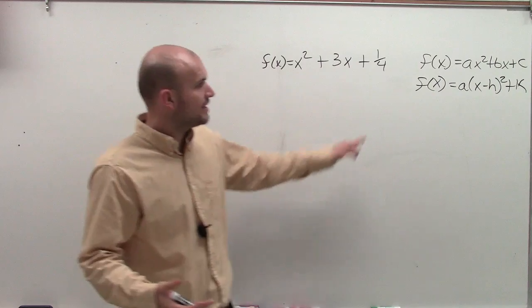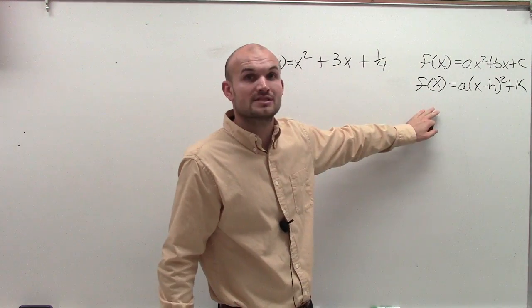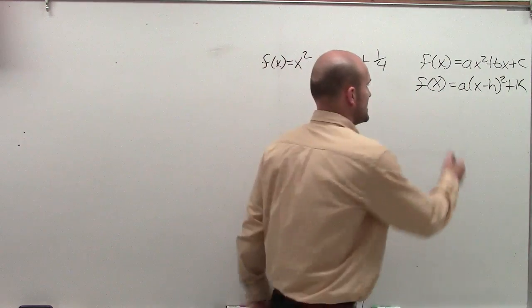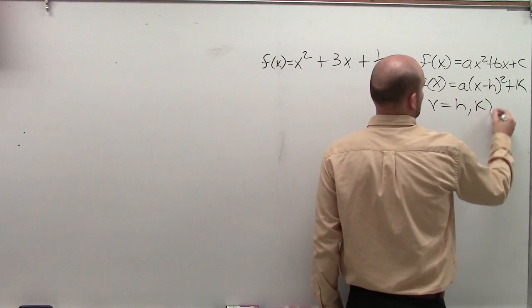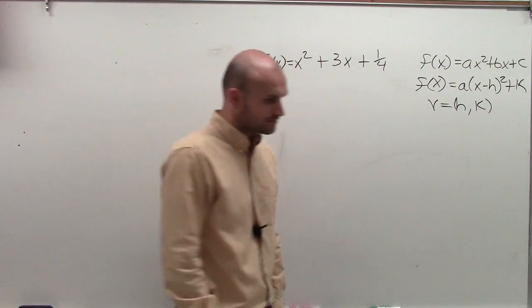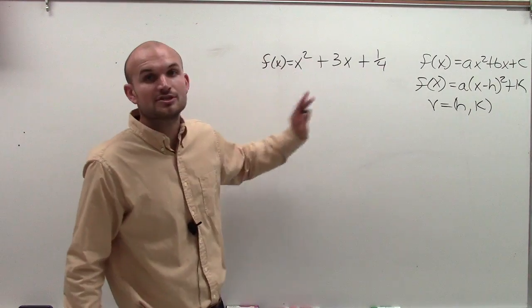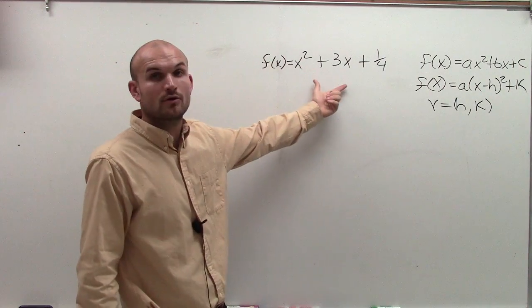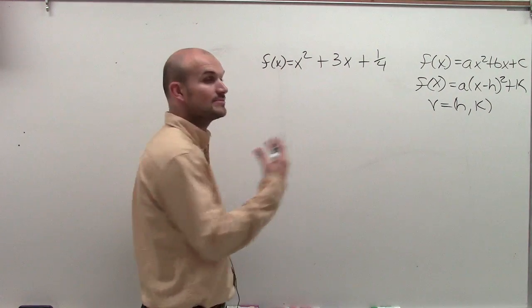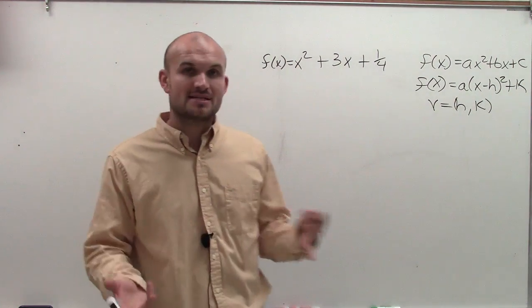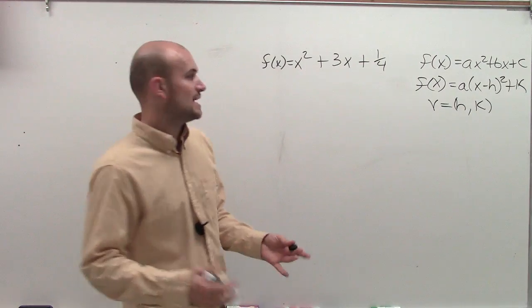So to find the vertex, it's very helpful to understand the standard form because the vertex, when in standard form, is equal to h comma k. So right now, what I want to do is I want to look to how can I create my quadratic into standard form? So what I want to do for that is I'm going to want to use the process of completing the square. And the process of completing the square goes in a couple steps.